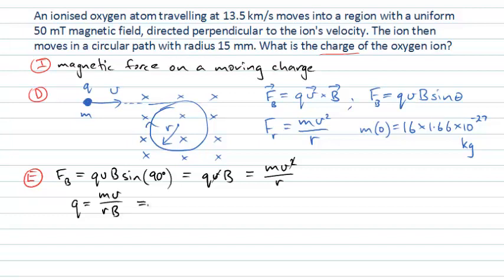And I can put those values in there now. I know I have 16 times 1.66 by 10 to the minus 27, that's the mass of my oxygen atom in kilograms, multiplied by the speed which is 13.5 kilometers per second.